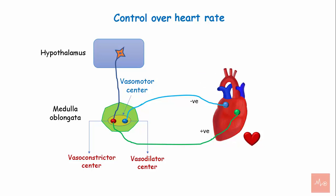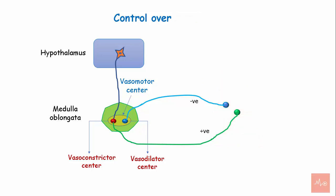Control over the blood pressure. Similar to its effect on the heart rate, the hypothalamus controls blood pressure by its action on the vasomotor center in the medulla oblongata.